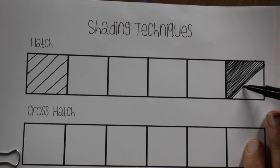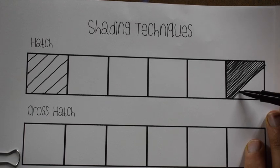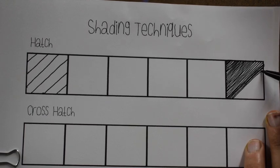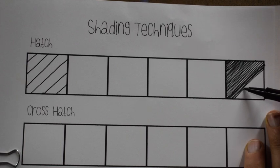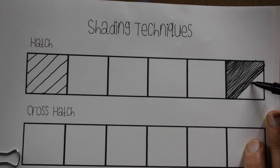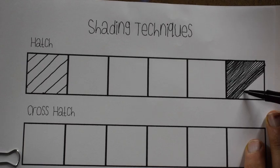And the goal on this is to get a shift. So a shift in value. And remember, value has to do with how light or dark a hue is. So in this case we're talking about white and black.